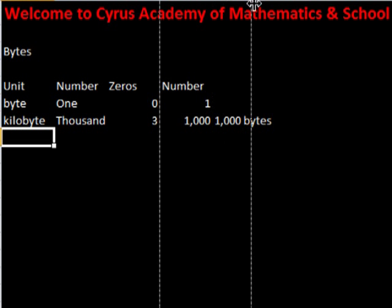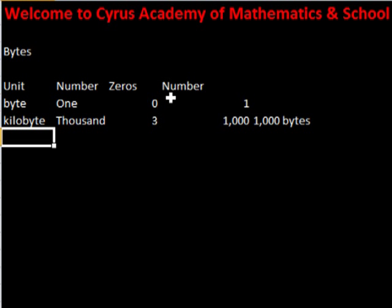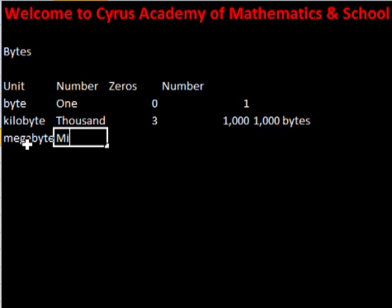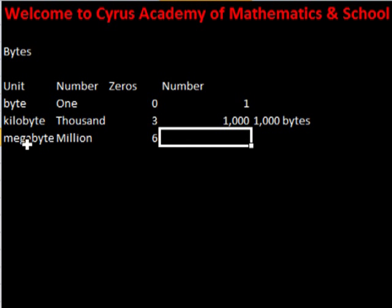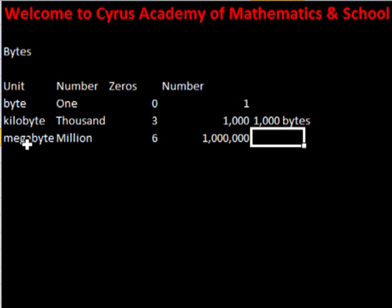Next we'll go to the megabyte. It is a million. There are six zeros in it. And there are one thousand kilobytes in it.